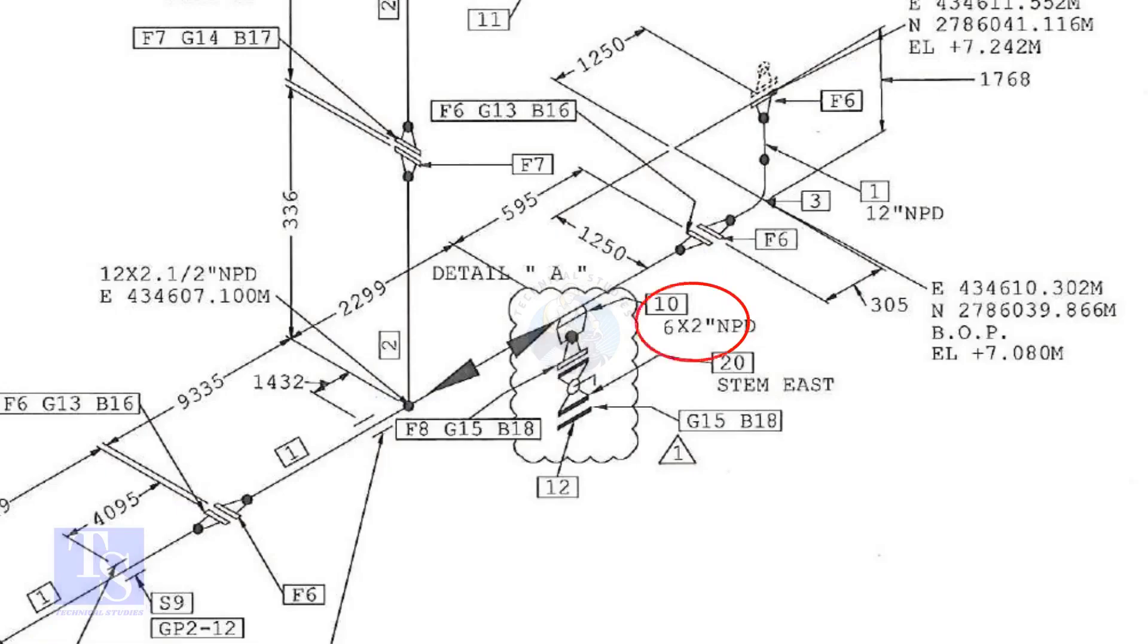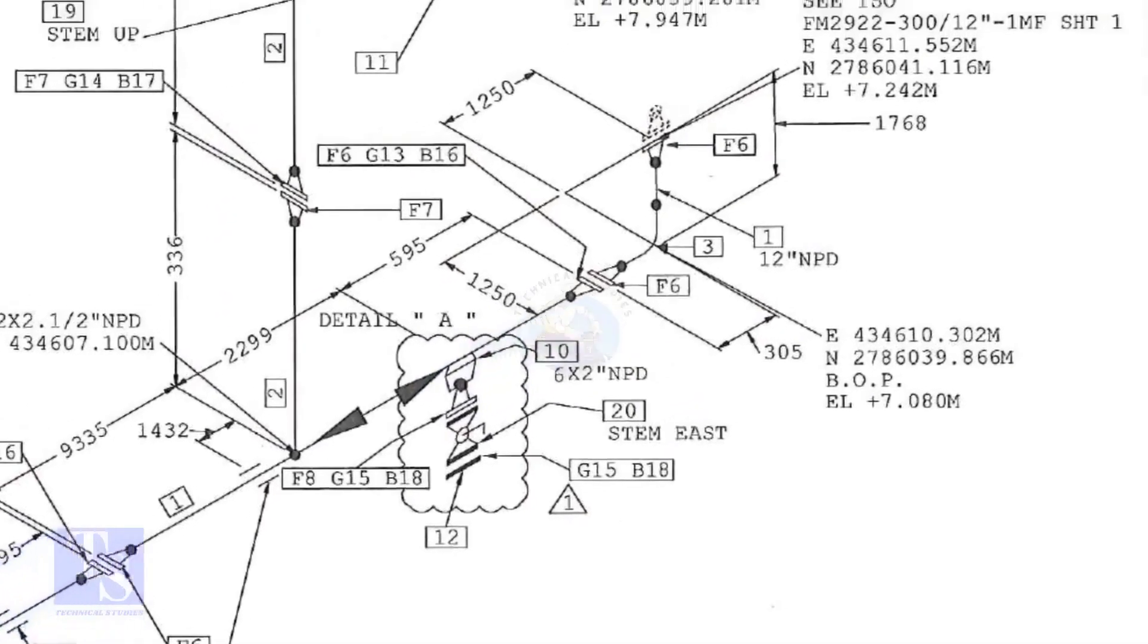In this drawing, the size of the weld-olet is 6 inch into 2 inch. Let us check what is item number 10 in the description.